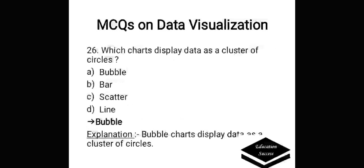Which charts display data as a cluster of circles? Options are: A. Bubble, B. Bar, C. Scatter, D. Line. Correct answer is bubble. Bubble chart displays data as a cluster of circles.